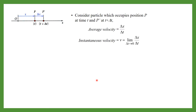Consider a particle P occupying position p at time t. After a small time interval Δt the same particle occupies position p′. The average velocity is the displacement Δx divided by the time taken Δt. To find instantaneous velocity at a particular instant, you take the limit as Δt tends to 0 of Δx/Δt.